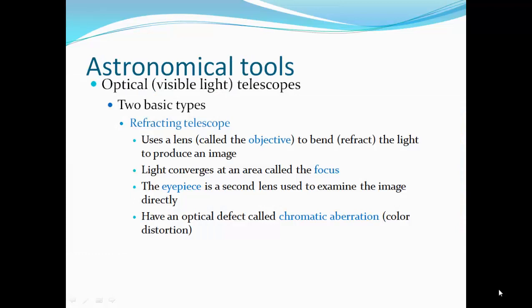Astronomical tools: we use visible light telescopes. There are two basic types. We have a refracting telescope, which uses a lens called the objective to bend or refract the light to produce an image. Light converges on an area called a focus. The eyepiece is a second lens used to examine the image directly. This has an optical defect called chromatic aberration, so colors can be distorted.